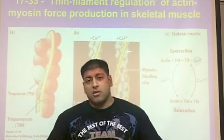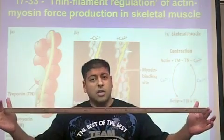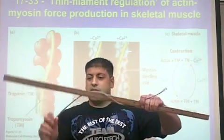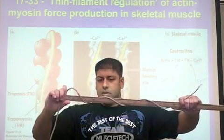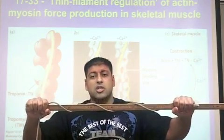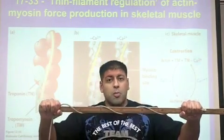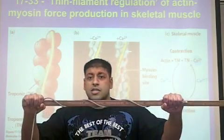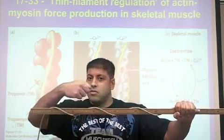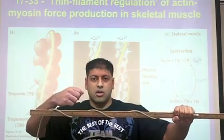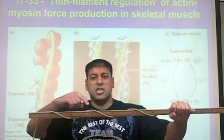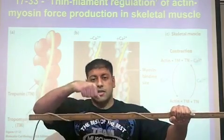It turns out that along the actin filament there is an additional filament that actually wraps around the actin filament, played by this cord in our demo. This protein that wraps around the actin filament is called tropomyosin. What tropomyosin does is position itself onto actin such that the myosin head cannot bind. So when skeletal muscle is in a relaxed state, tropomyosin is positioned such that myosin cannot bind to actin.